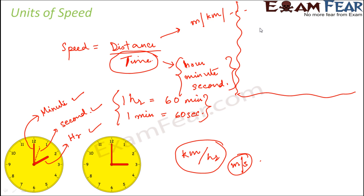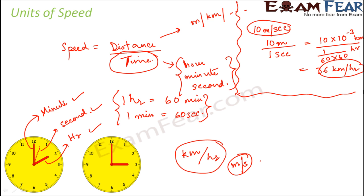Let's say you have a value 10 meter per second and you want to convert it into kilometer per hour. 10 meter per second basically means 10 meter divided by one second. To convert 10 meter into kilometer, 10 times 10 to the power minus 3 kilometer, and one second would be 1 by 60 into 60 hours. When you calculate this, it comes out to be 36 kilometers per hour.